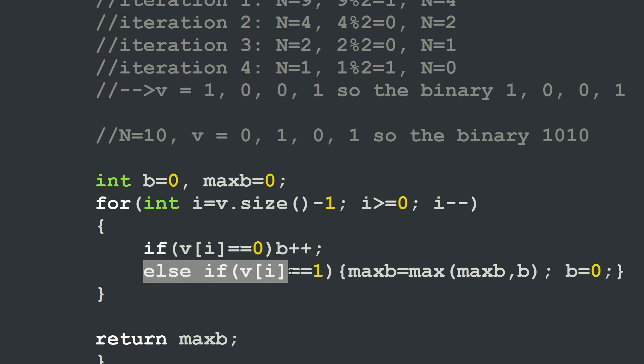Otherwise, if v[i] is equal to 1, I will check if my new b counter value is higher than the maximum. In this case, I will store its value in the maximum b, in the maxb variable. So maxb will be holding the maximum value of b that I have reached so far. And then I will reset b to 0 because I encountered one. So I finished my sequence and my counter will be reset to 0.